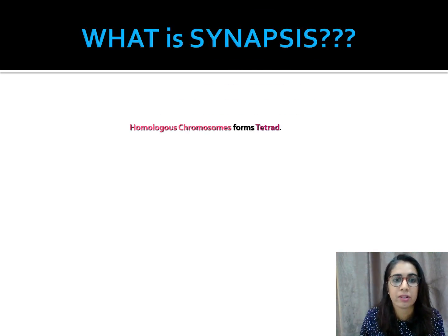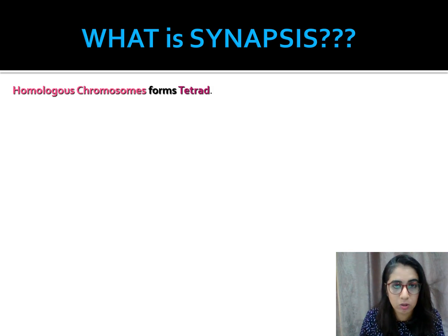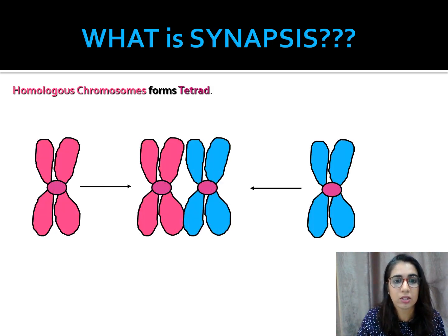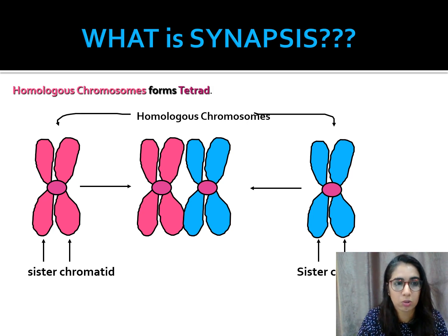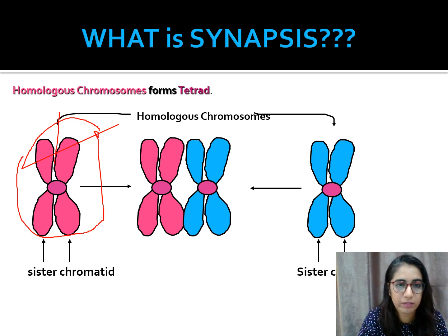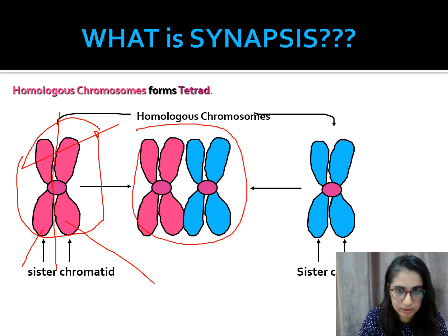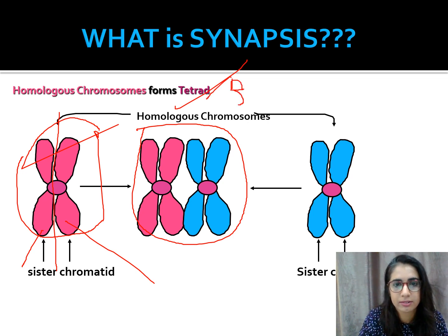Synapsis is when homologous chromosomes come together to form a tetrad or bivalent — these terms mean the same thing. One chromosome consists of two sister chromatids. When two homologous chromosomes are bound together, this is called a homologous pair, a tetrad, or a bivalent.